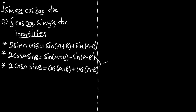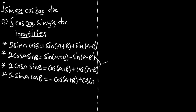The fourth identity: if we have 2 sin(A) cos(B) and we want to replace it with cosine instead of sine, that is going to be negative cos(A+B) plus cos(A-B). These are the identities we are going to use for this special form of integration.